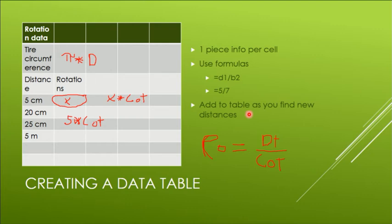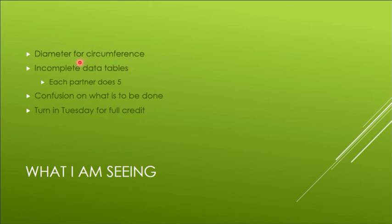You want to continually add to this data table. For example, if I know the diameter of my tire here, I can multiply it by pi and that'll give me the tire circumference. You'll be putting the rotations in here. Diameter for circumference - you'll need to know the diameter of your tire. I'm incomplete data table loop partner just fine.